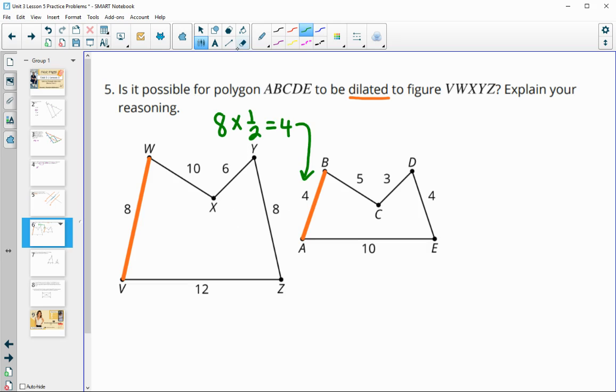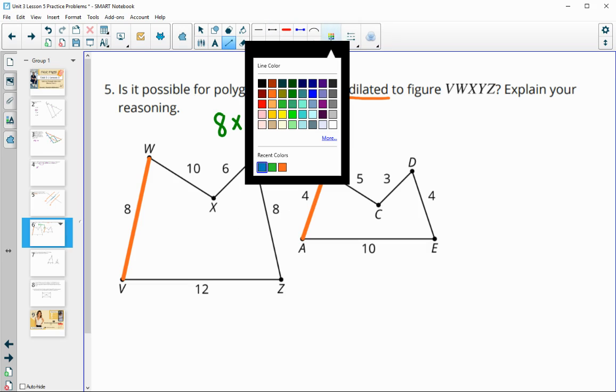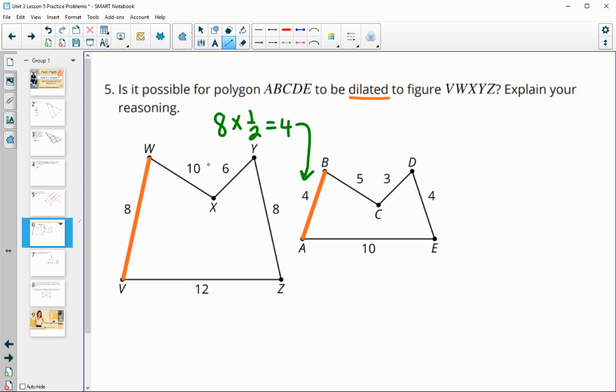And then that needs to happen with all the other pieces in order for this to be a dilation. So we can see 10 goes to five, six goes to three, eight goes to four. Those are all good. But when we take a look at this bottom one, VZ to AE, 12 times one-half is not equal to that 10. So this would not be a dilation because all the sides were not changing at the same scale factor.